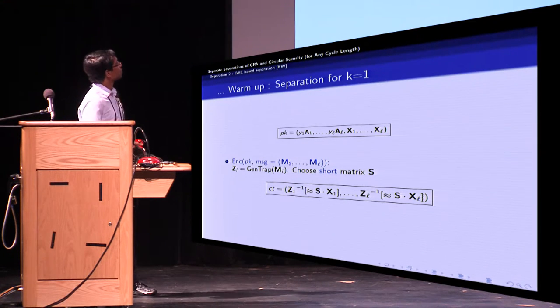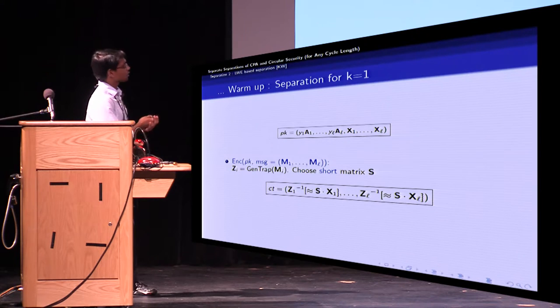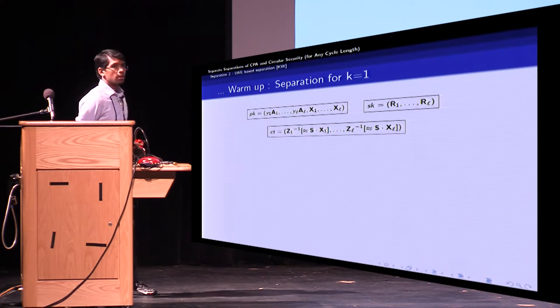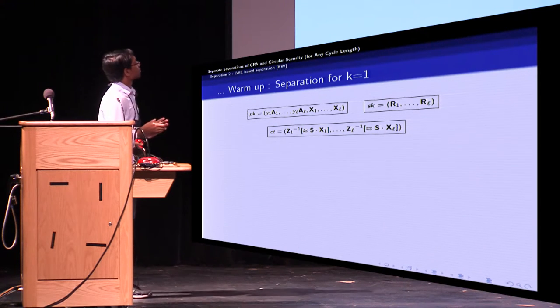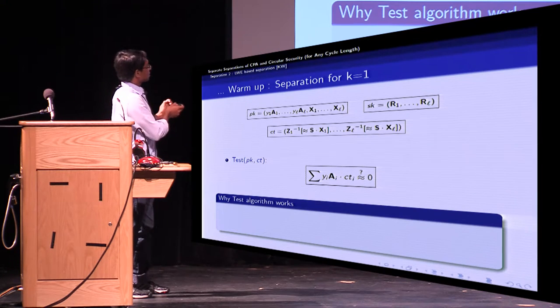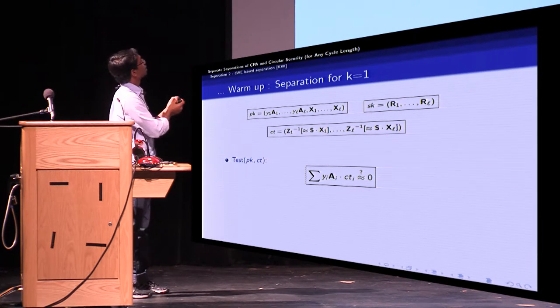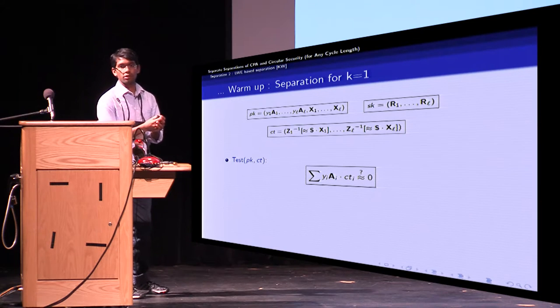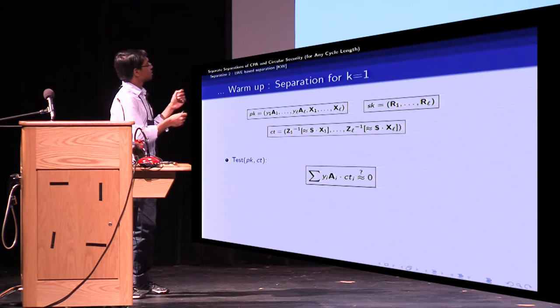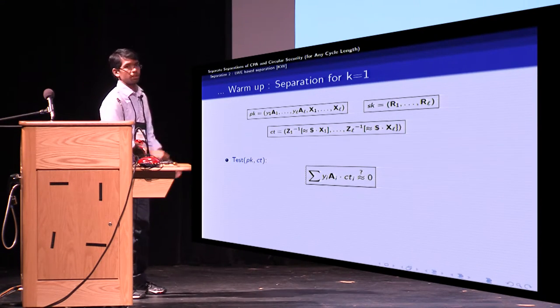So given this public key and the ciphertext, let's now see how the test algorithm works. The test algorithm is really simple. It takes the i-th component of the public key, multiplies it with the i-th component of the ciphertext, and then checks if the sum is close to zero.